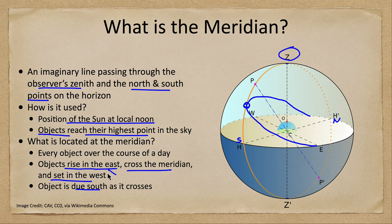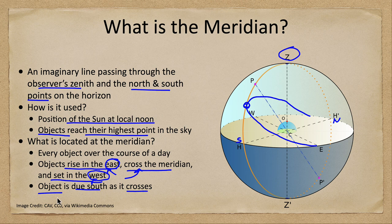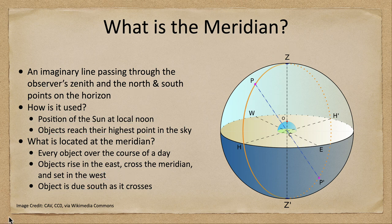Every object is going to rise in the east, cross the meridian when it reaches its highest point, and finally set in the west. To clarify, rising in the east and setting in the west means those general directions — objects don't rise exactly east or set exactly west, they may be north or south of those locations. The object is actually due south as it crosses the meridian.